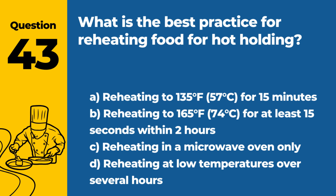Question 43: What is the best practice for reheating food for hot holding? a. Reheating to 135°F (57°C) for 15 minutes. b. Reheating to 165°F (74°C) for at least 15 seconds within 2 hours. c. Reheating in a microwave oven only. d. Reheating at low temperatures over several hours. Answer: b. The best practice for reheating food intended for hot holding is to reheat it to an internal temperature of 165°F for at least 15 seconds within 2 hours, ensuring it is safe to eat.